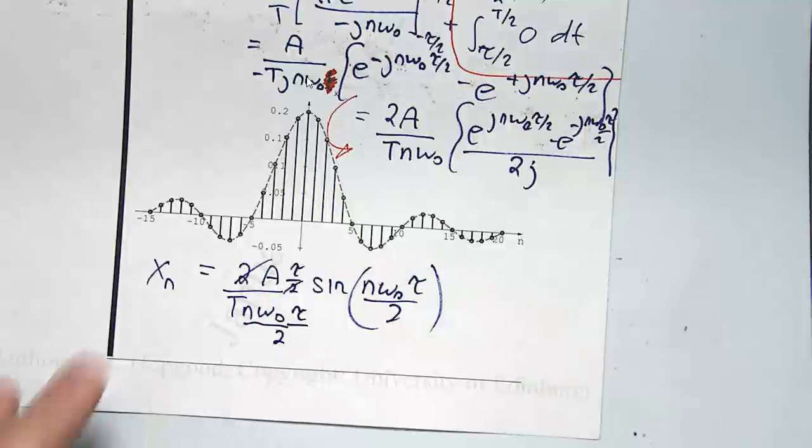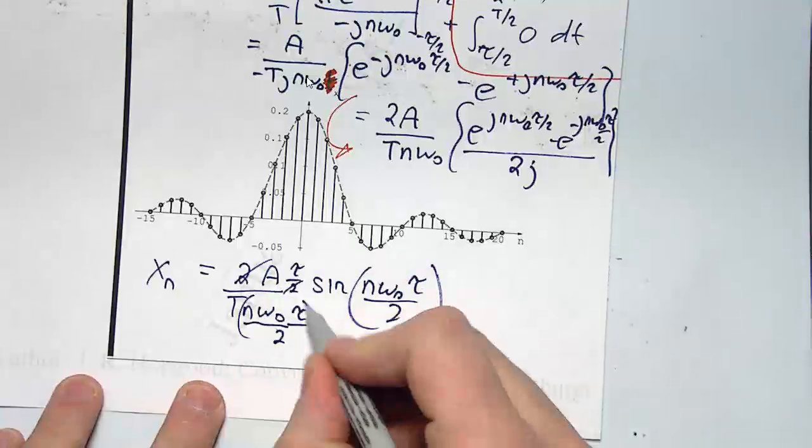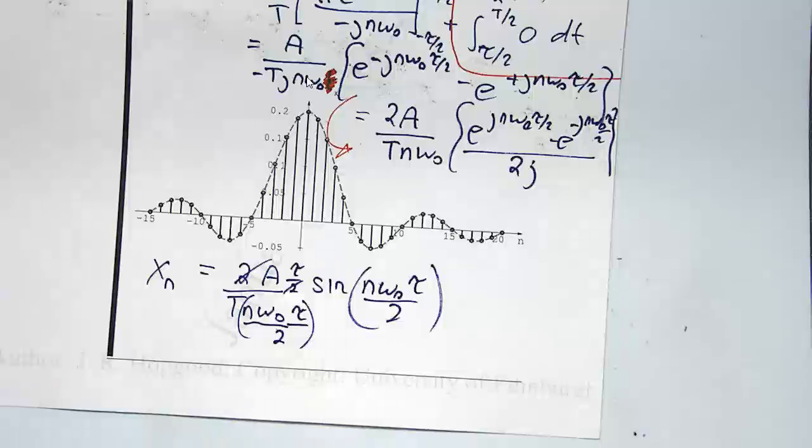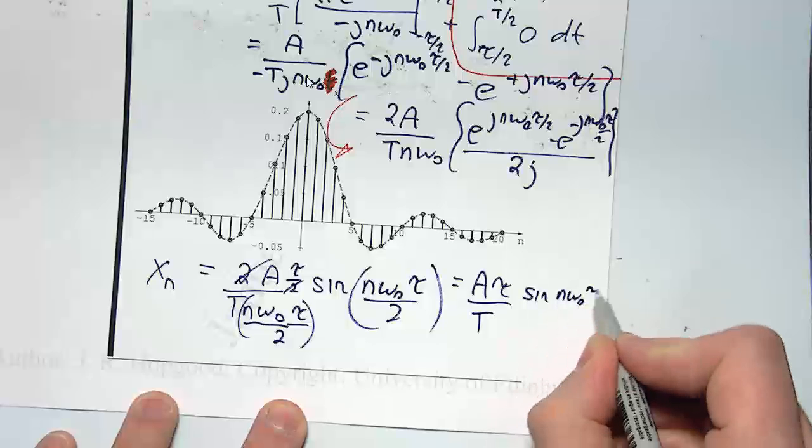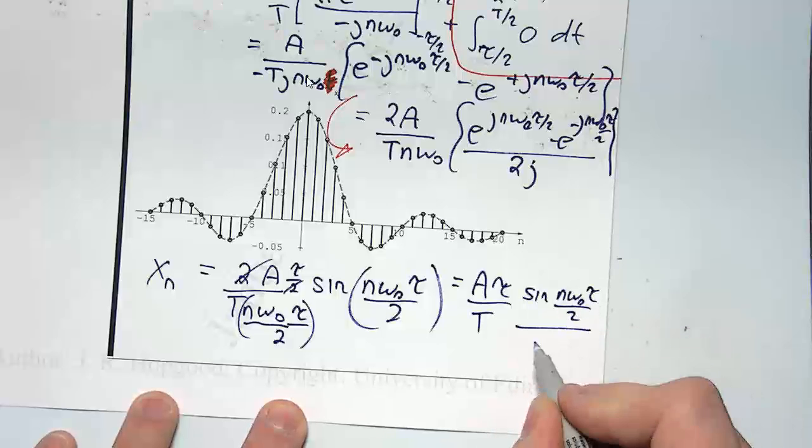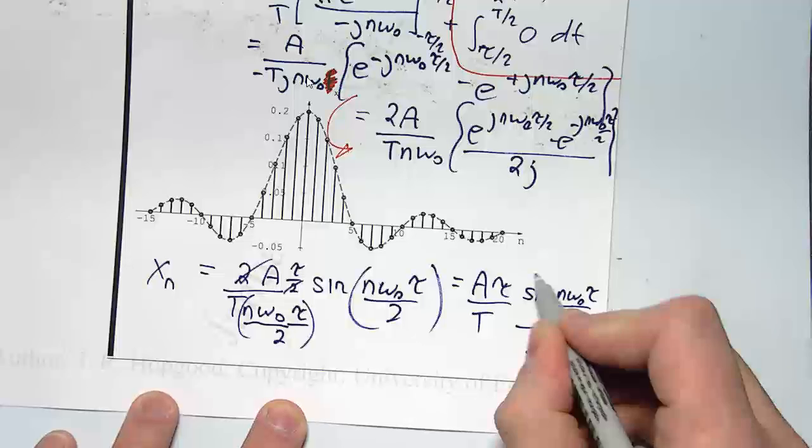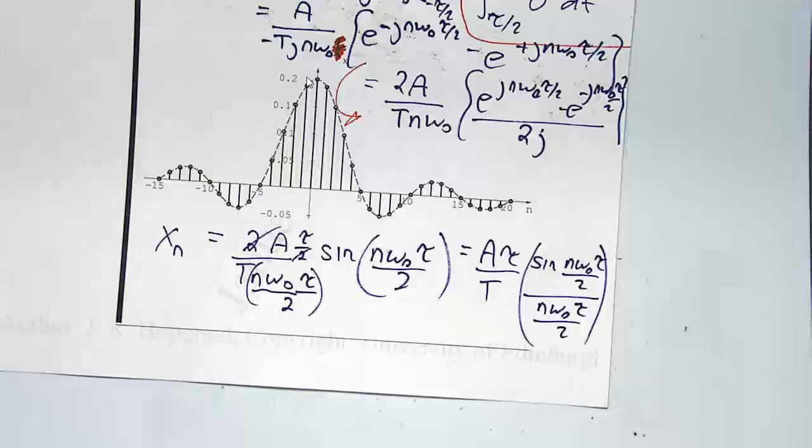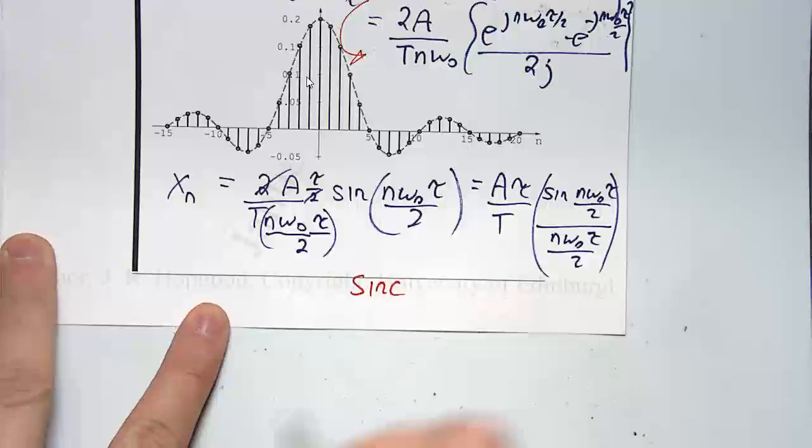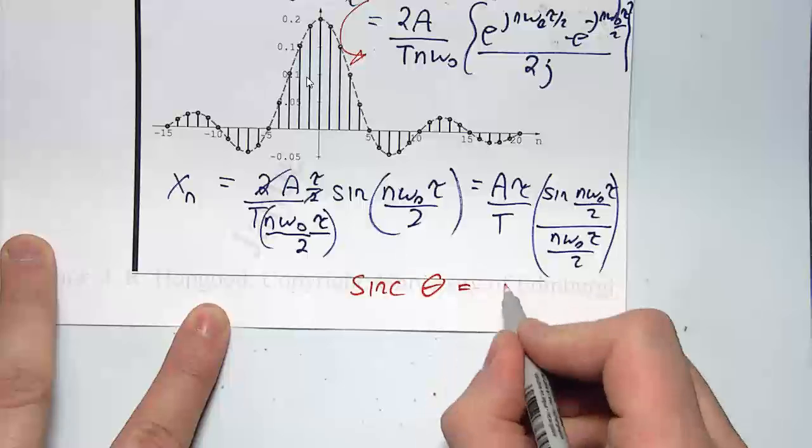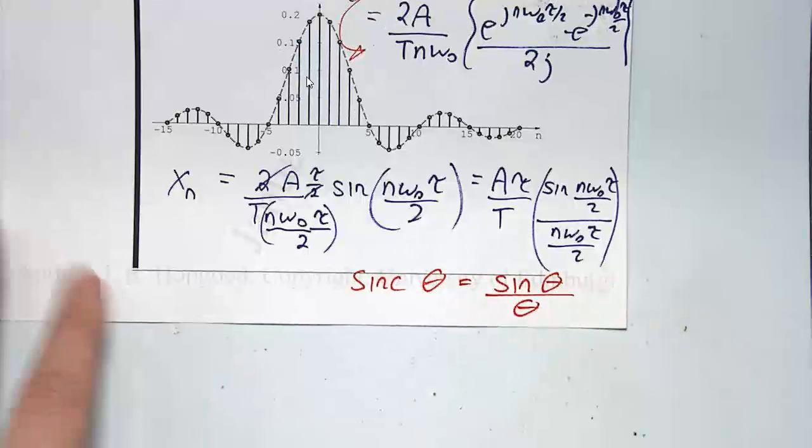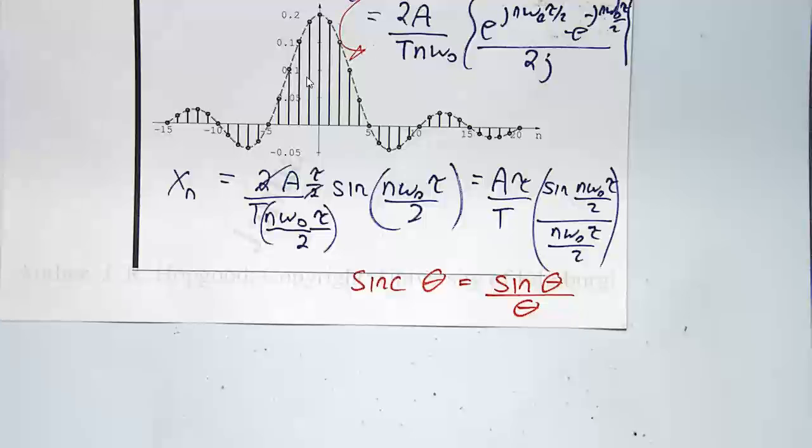And so these 2's cancel there. And what I spot is, I've got, if I write this as A tau over t, sine n omega 0 tau over 2, over n omega 0 tau over 2. And this function, in the brackets, is basically an example of a function which is called the sinc function. And I'm going to define sinc of a function value theta as sin of theta divided by theta. So have you come across a sinc function before in maths?